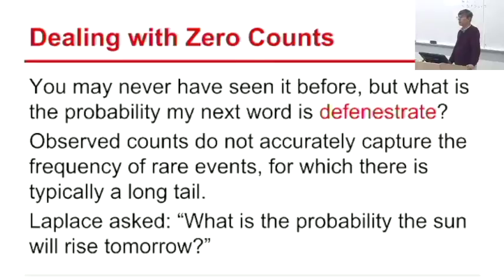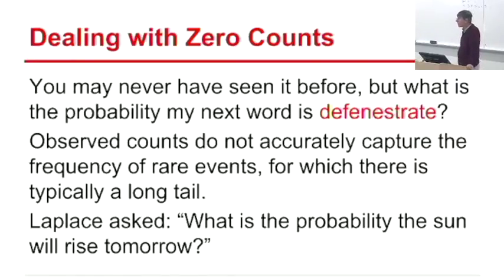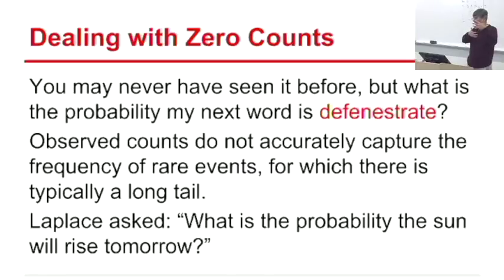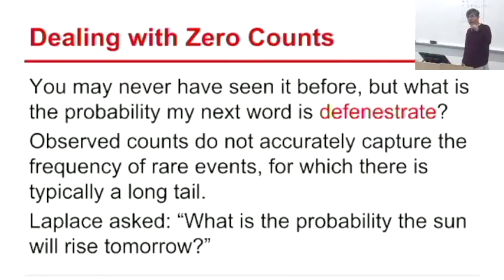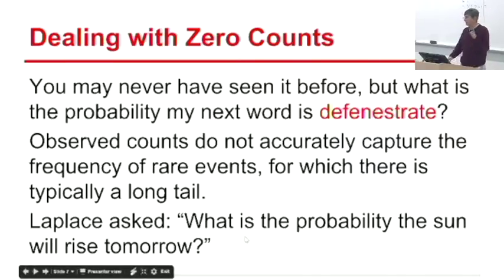This doesn't mean we can't build a good spam classifier. It means no classifier should base a decision on a single rare occurrence of a word like 'defenestrate.' We want decisions based on a preponderance of evidence. Rare features that appeared once in training should not dominate. We need an accurate way to estimate probabilities of low-frequency events.